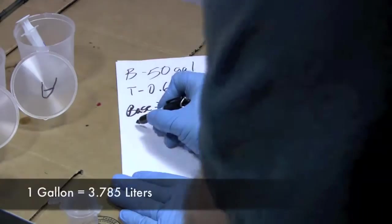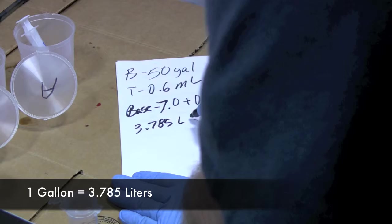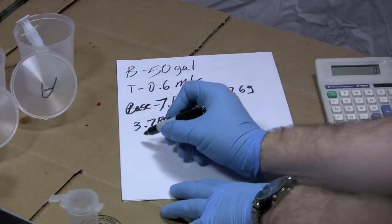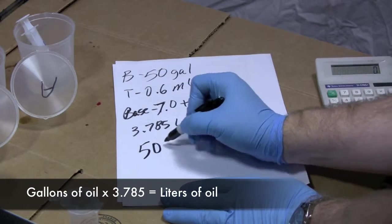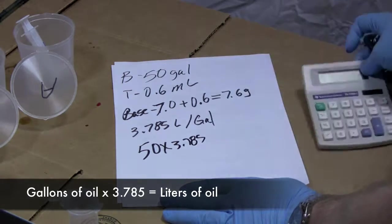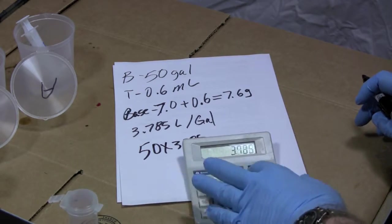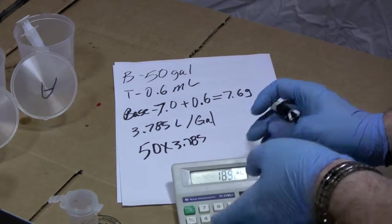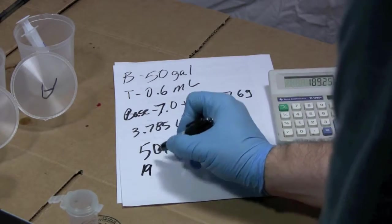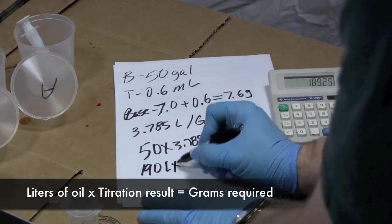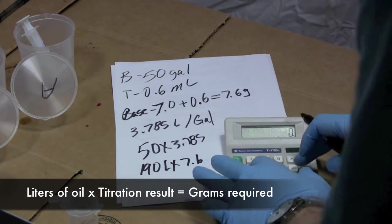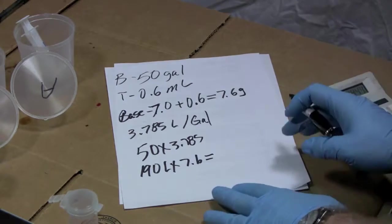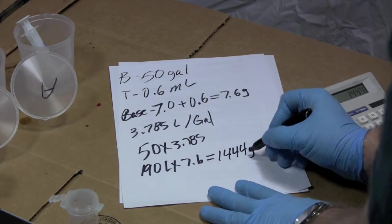Now, how do you figure that into a gallon? Well, there are 3.785 liters to a gallon. Okay. So if we have a 50 gallon batch times that by 3.785, I'm going to calculate here. We've got 189.25 liters. You can round up with this, so I'm going to call it 190 liters. And it times that by 7.6. And I get 1,444 grams.